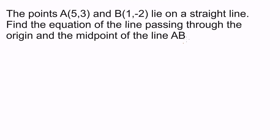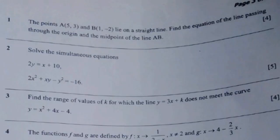We now start by reading the question. Let's check the paper — here is the question. We are going to start with question 1: points A(5, 3) and B(1, -2) lie on a straight line. Find the equation of the line passing through the origin and the midpoint of the line AB.